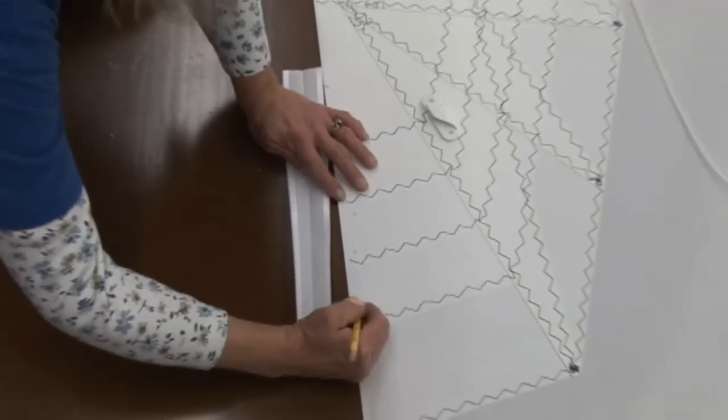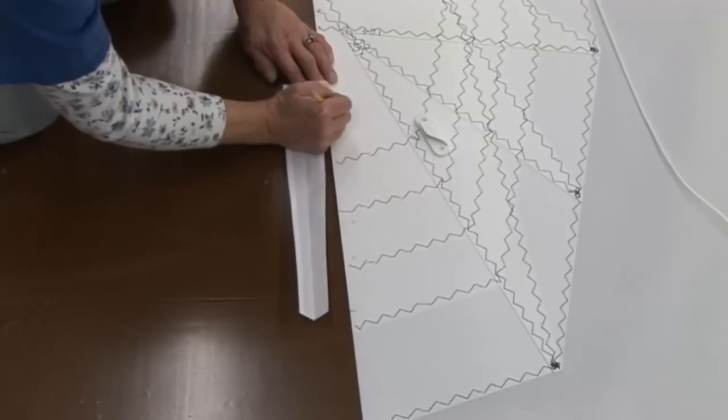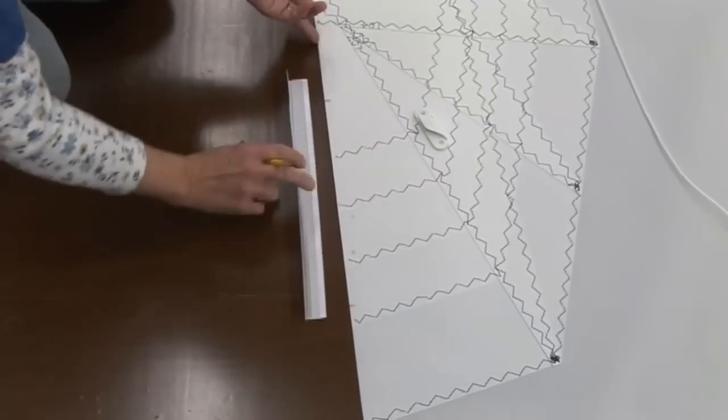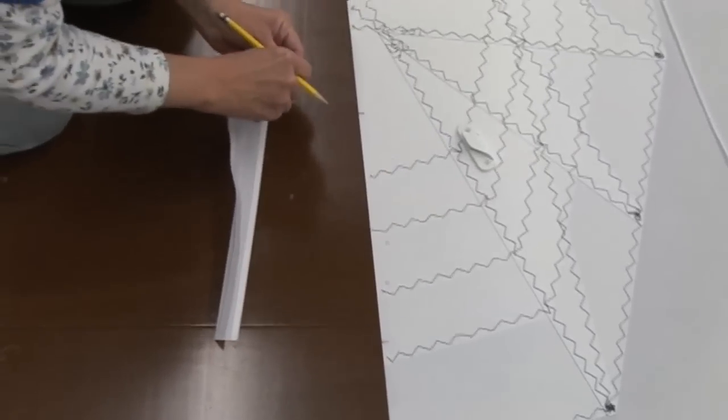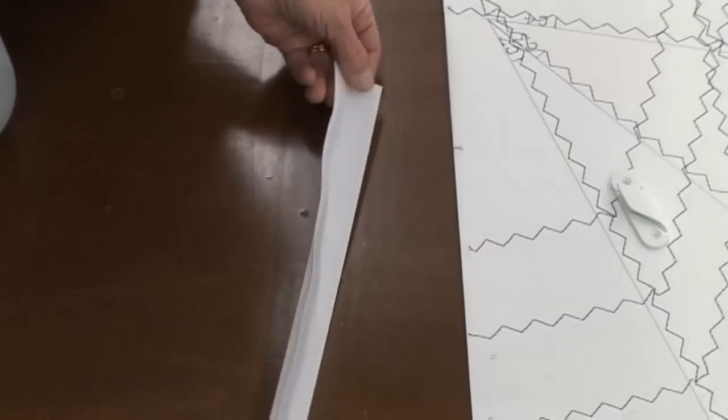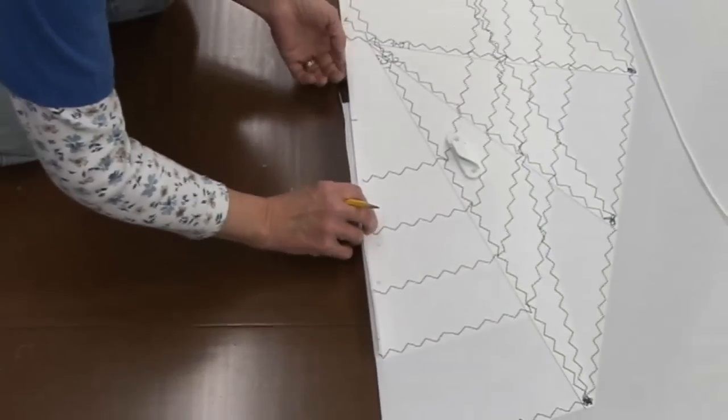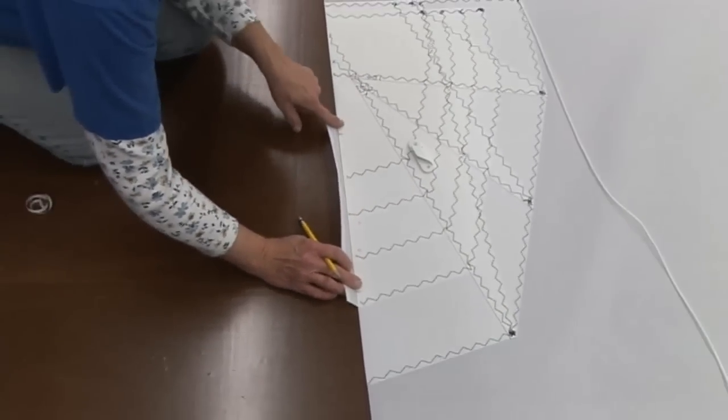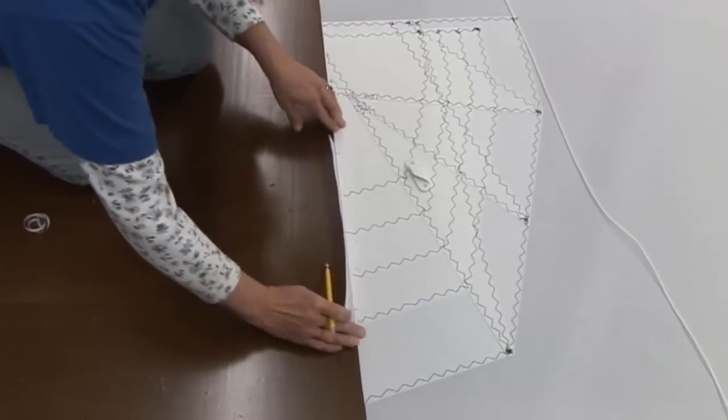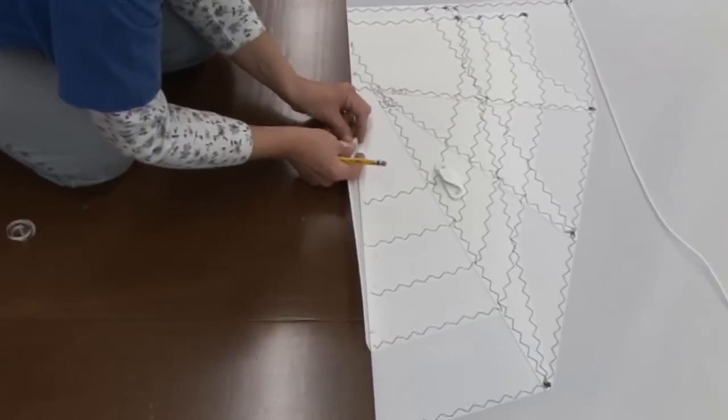She marks the position for that cleat and will now position the Dacron tape along the edge where that cleat will rest. The leach line will come out of a taped sleeve approximately 1 to 2 inches above the cleat. So we want to make sure we have a covering for that.